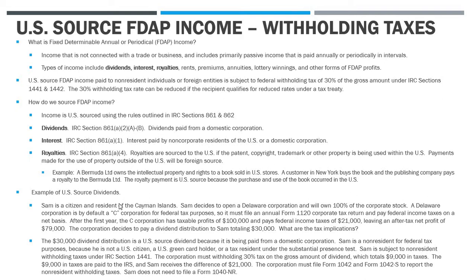Now let's go into more depth on a US source dividends example. We have Sam — a citizen and resident of the Cayman Islands — who decides to open a Delaware Corp and own 100% of the stock. Under default rules, a Delaware Corp is treated as a C-corp for federal tax purposes, filing a Form 1120 and paying federal income taxes on net taxable income. After the first year, the corp has taxable profits of $100,000. At the 21% tax rate, it pays $21,000 in taxes, leaving $79,000 in after-tax profit. The corporation then pays a dividend to Sam totaling $30,000. The $30,000 dividend distribution is US source because it's paid from a domestic corporation.